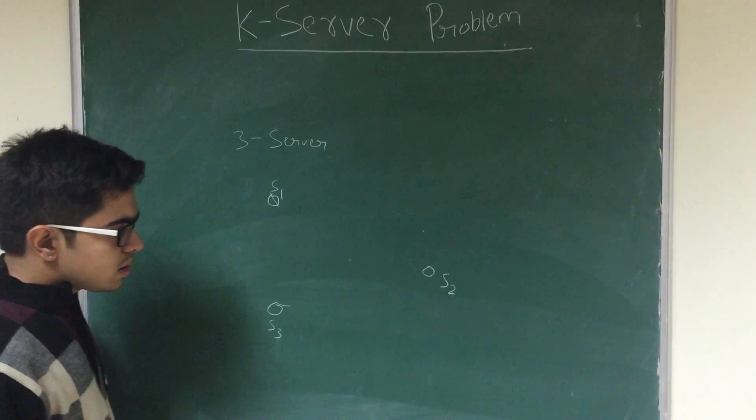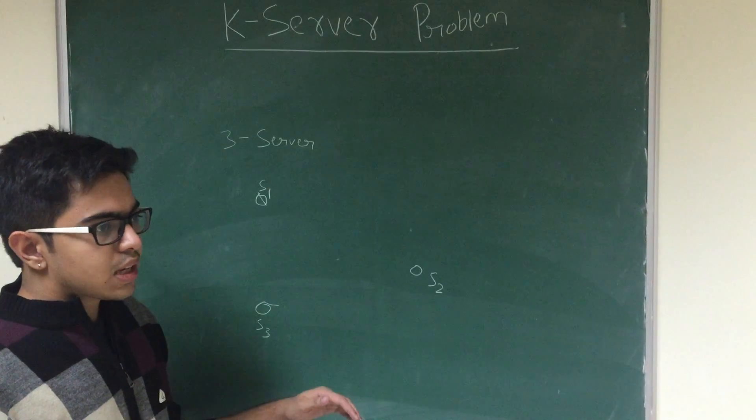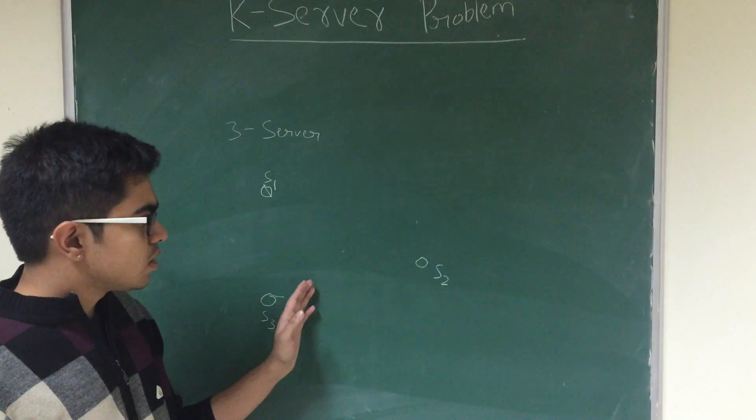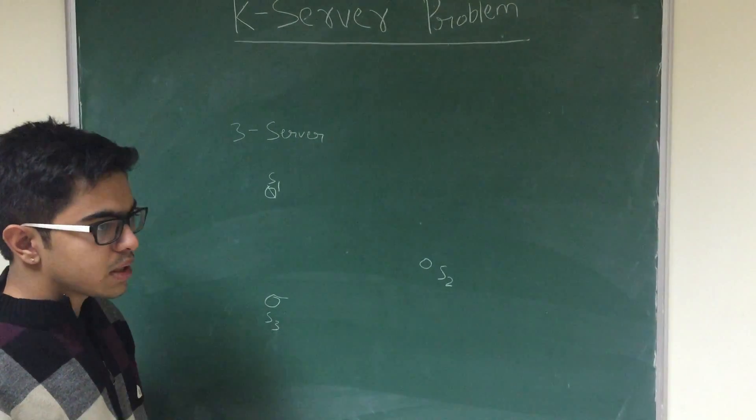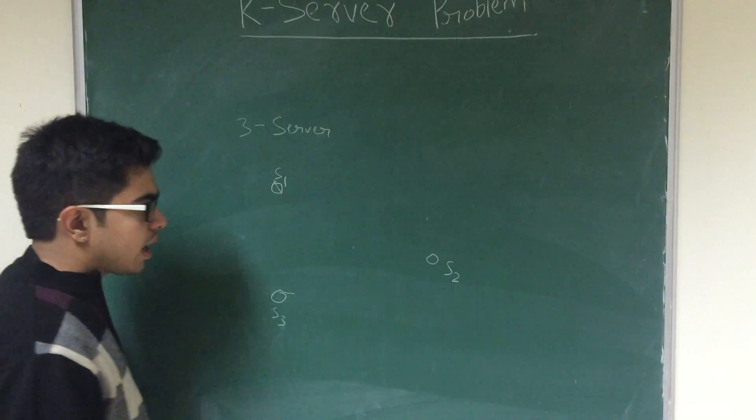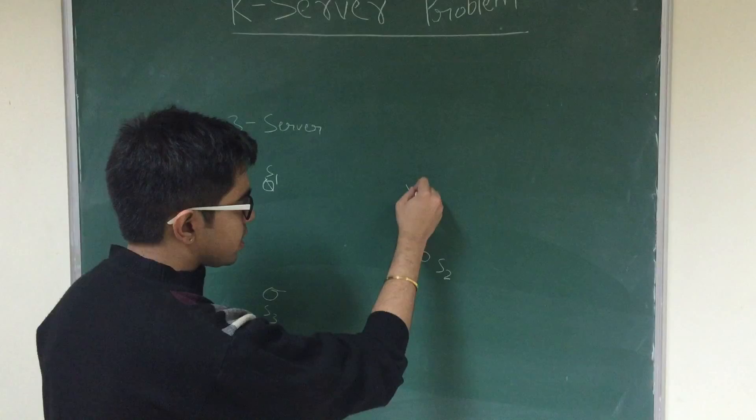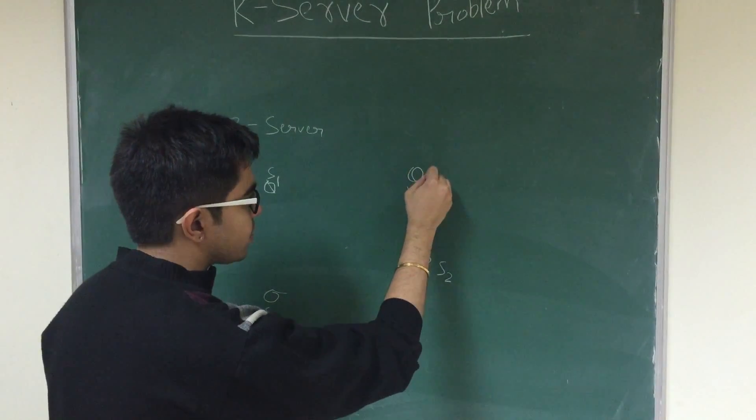Now, since our algorithm deals with assigning the servers to the incoming requests, which are continuously coming requests, and the algorithm is an online algorithm, I'll have a request that arrives, let's say the request q1 that arrives at a time t1.